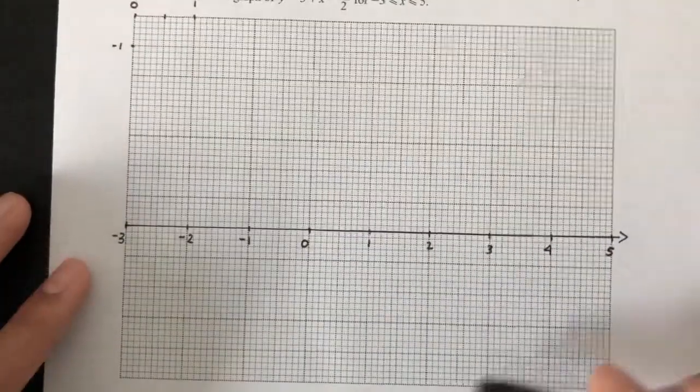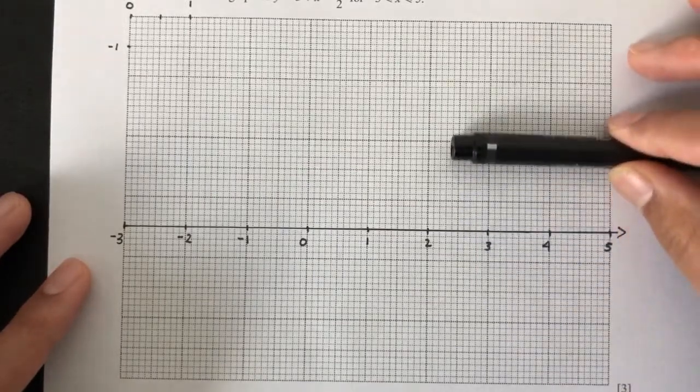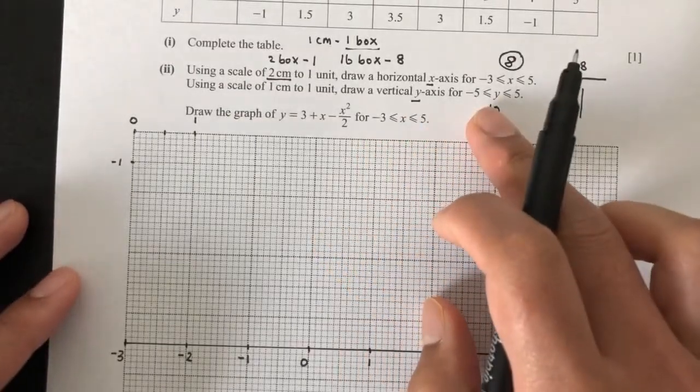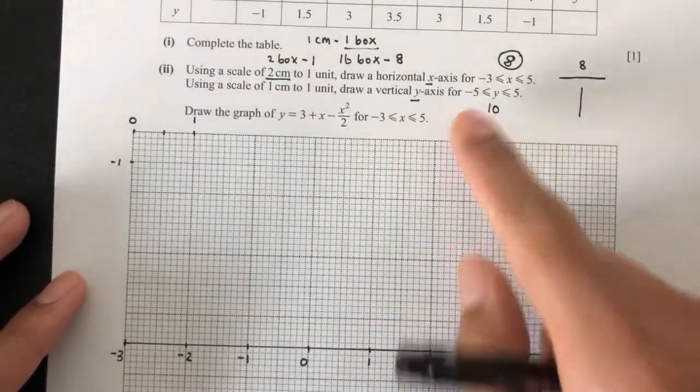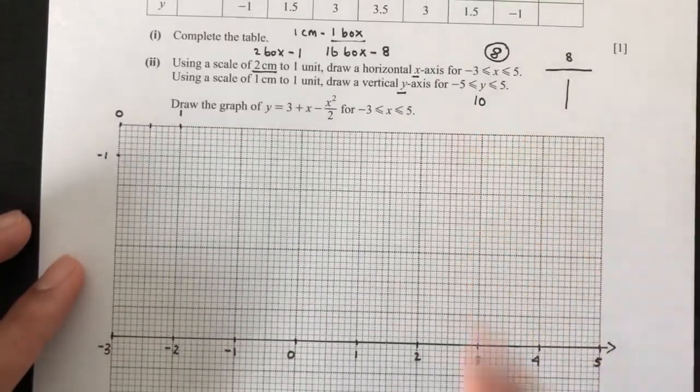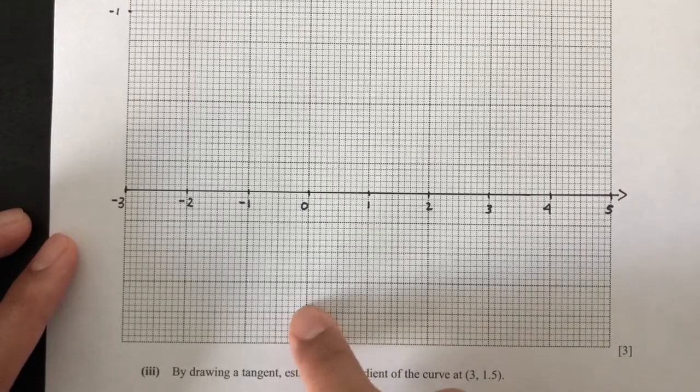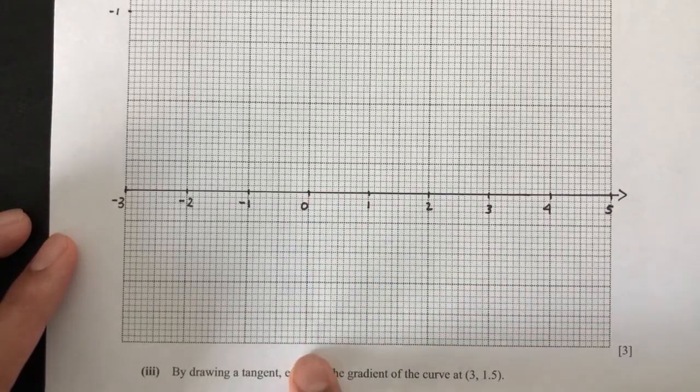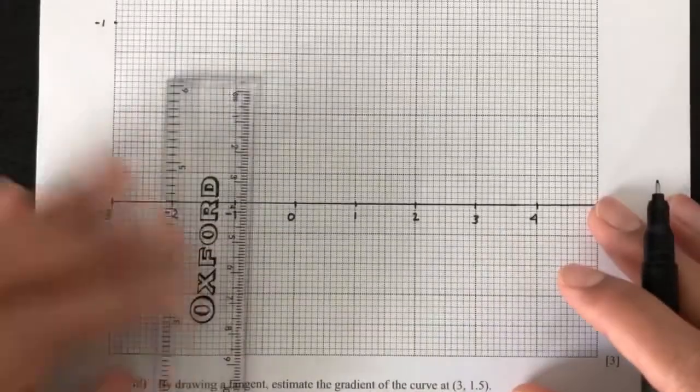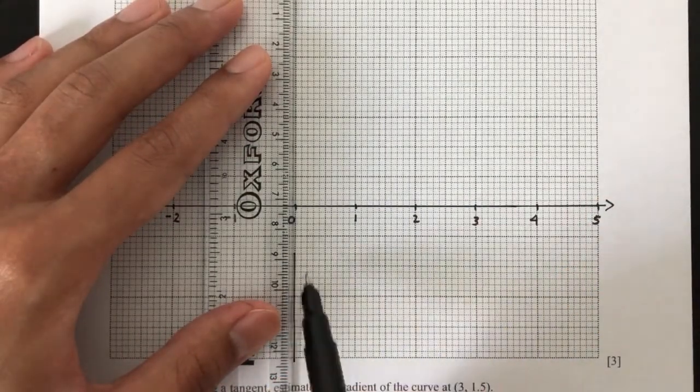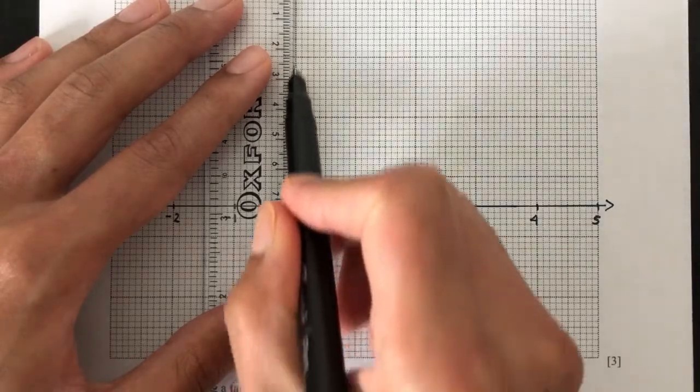Now the question you may have is, how do I know where to draw this? Can it go up or down? This one depends on your y-axis. Since you have seen that we have 12 boxes on the vertical axis, and we only need 10, we can count from the bottom. Let's say we count 1, 2, 3, 4, 5. So as long as we know we have enough space for the -5, we are good. That's all we need, basically.